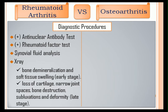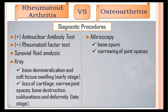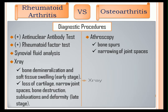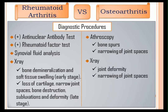On the other hand, the diagnostic procedures under osteoarthritis: arthroscopy will show bone spurs and the narrowing of the joint spaces. Bone spurs or osteophytes are bony projections that develop on the edges of the bones. X-ray will show joint deformity, narrowing of joint spaces, and bone spurs.